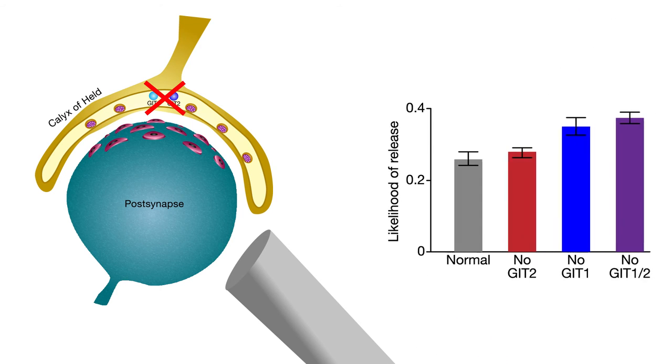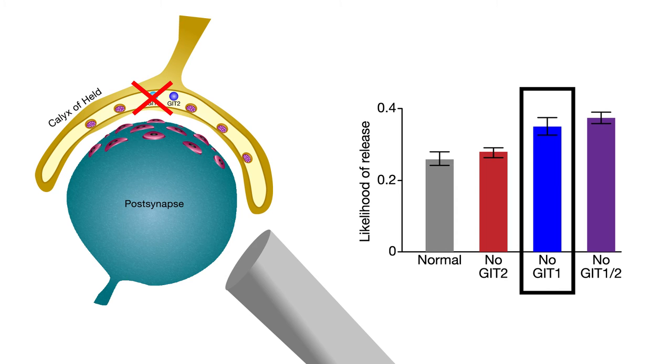Further analyses showed that the absence of GIT1 in particular increased the likelihood that neurotransmitters would be released from the pre-synapse.